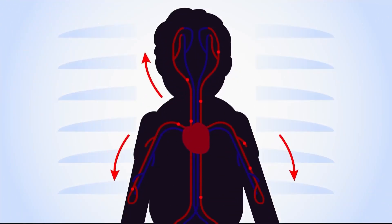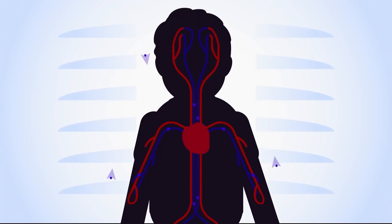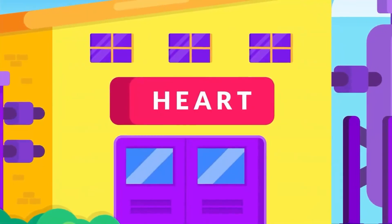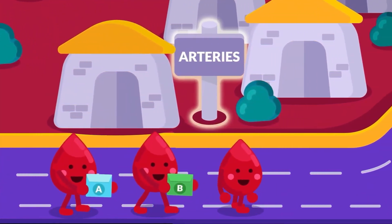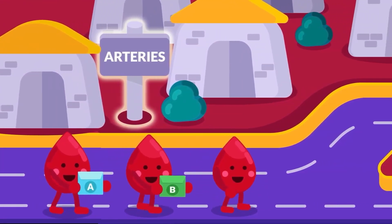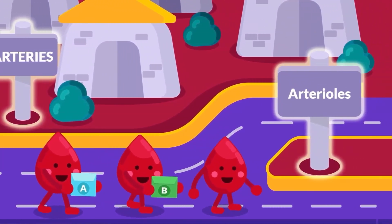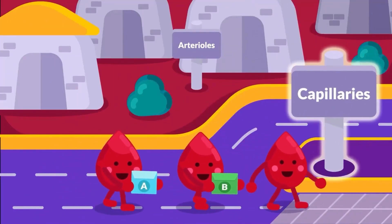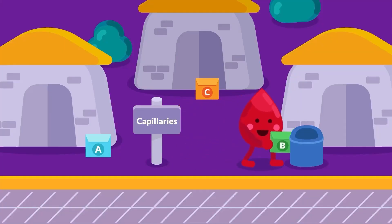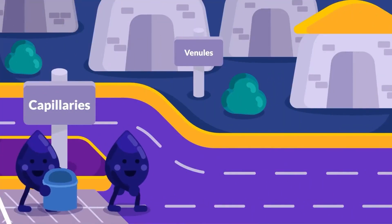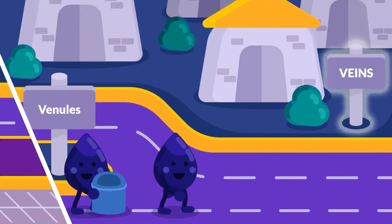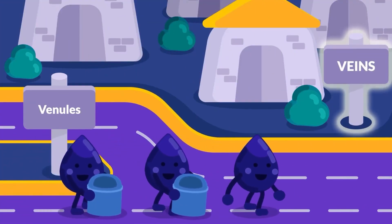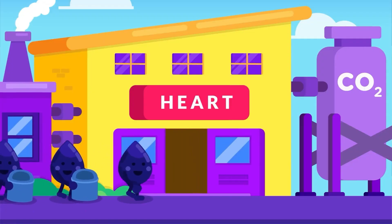Arteries transport blood from the heart to organs. Then the blood is transported back from organs to the heart by veins. Blood in arteries travels away from the heart and then diverges into smaller branches, forming arterioles. Blood is distributed to capillary beds, which is the exchanging spot with the tissues. Capillaries then lead the blood flow to the smallest branch of the veins, which is the venules. These little vessels transport the blood to the veins, which eventually return to the heart.